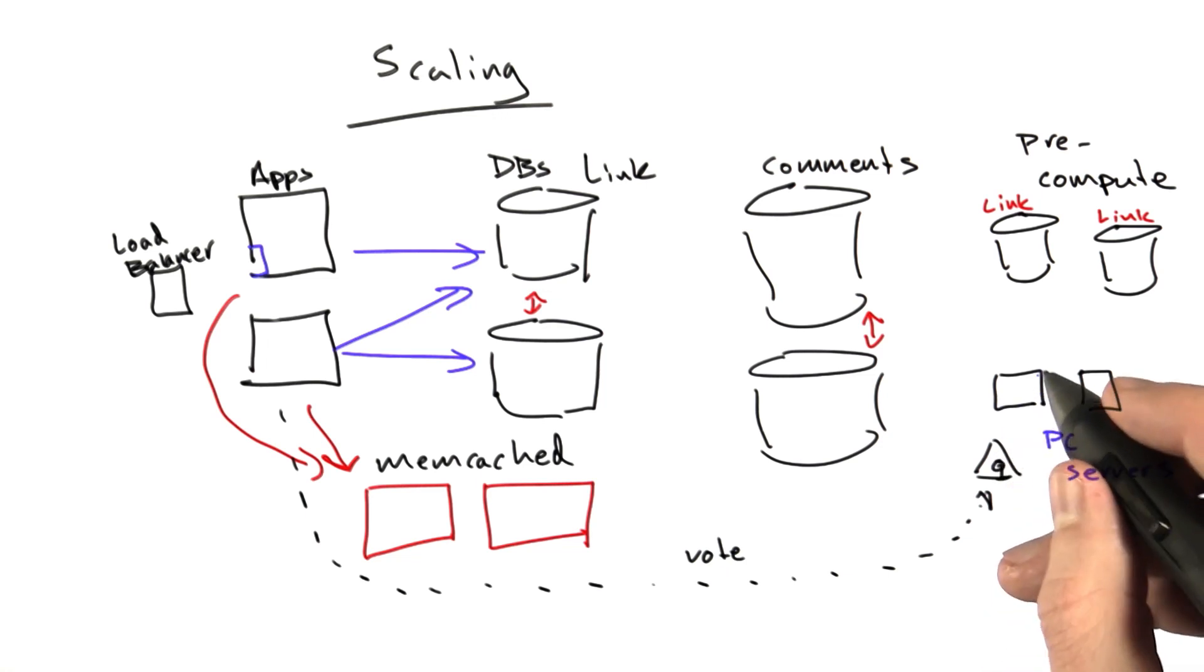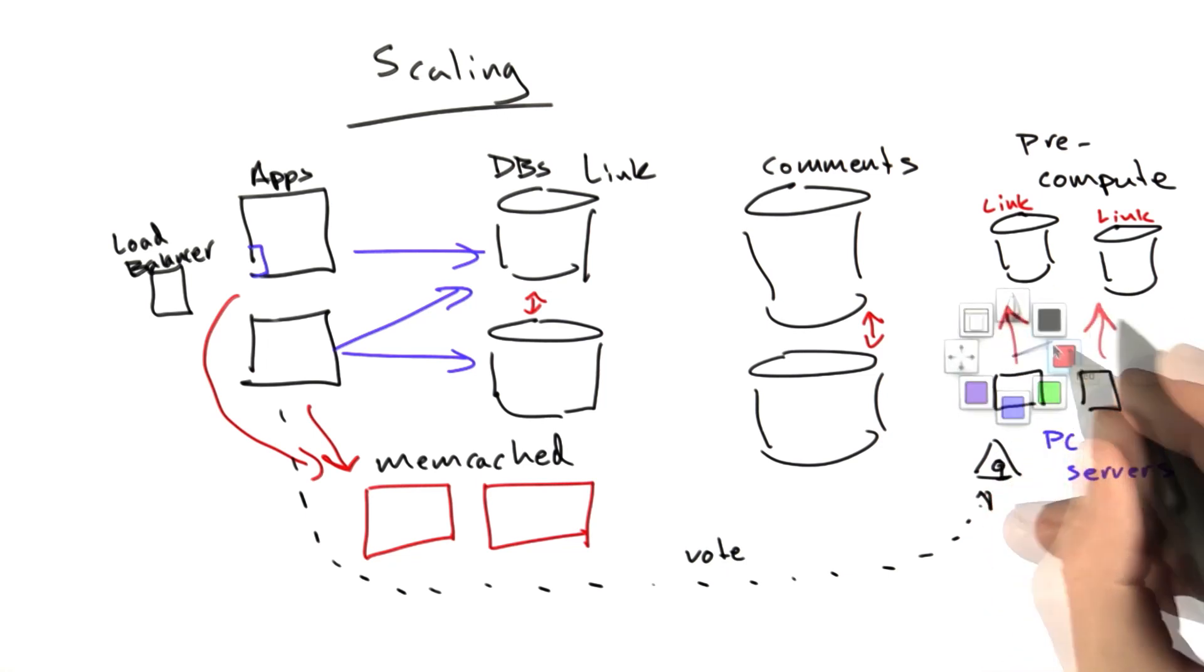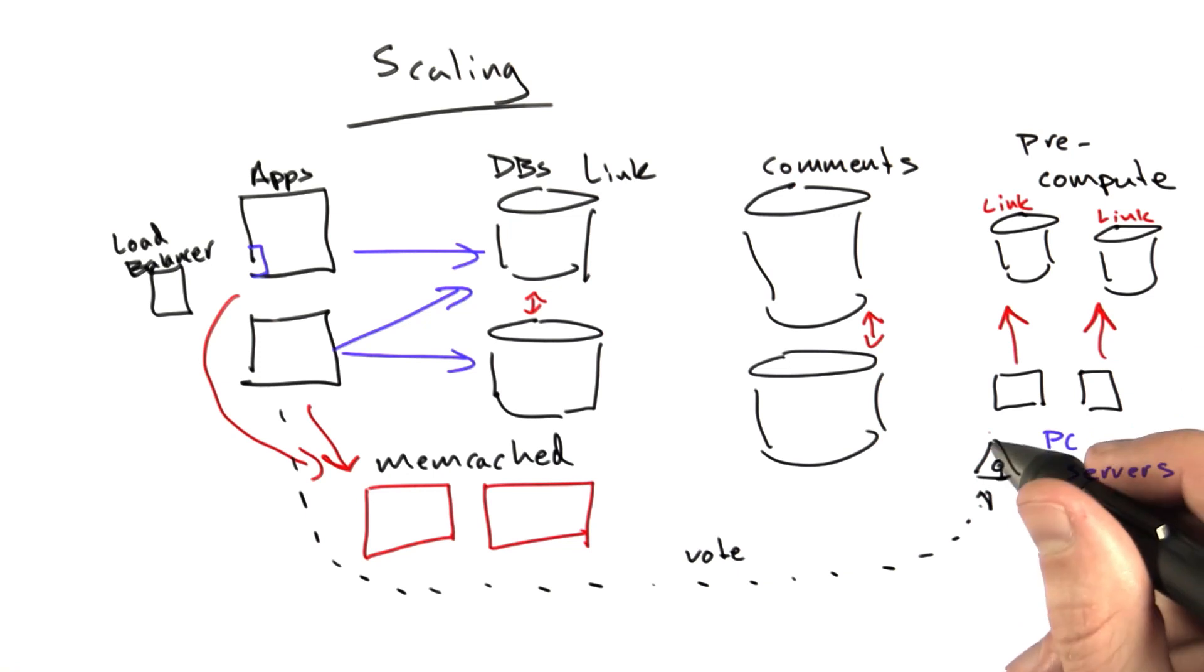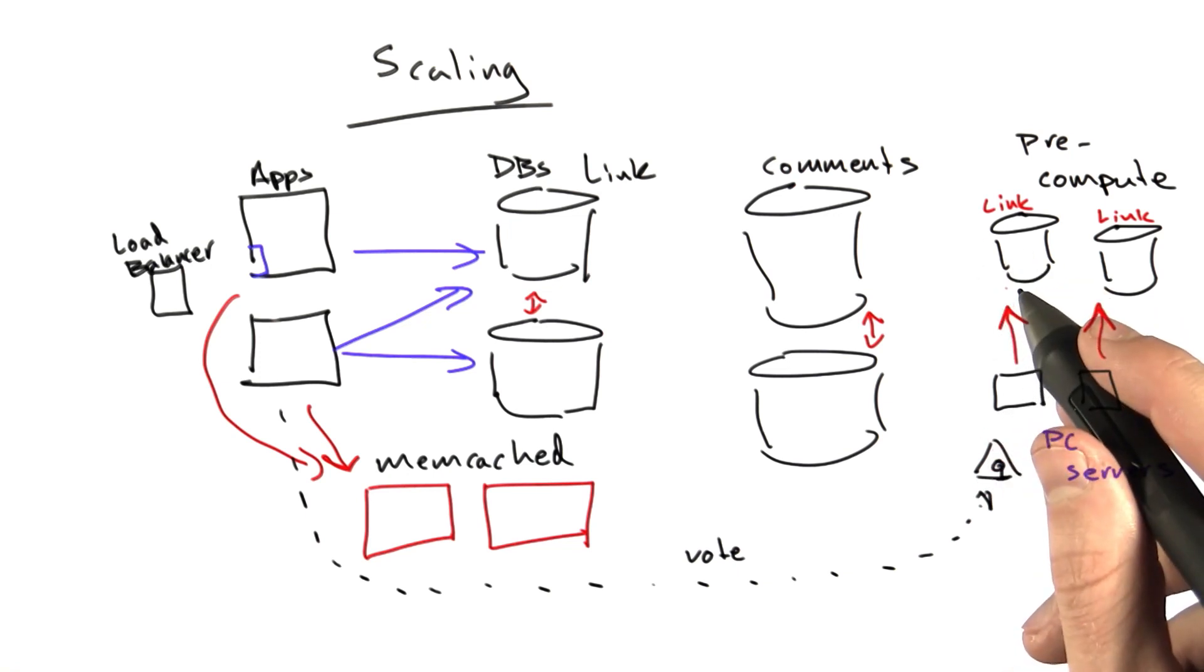These machines would pull off these jobs, and then they'd run those queries against the database. They would just mercilessly, as fast as they could, take a job off the queue and run the query against these databases.